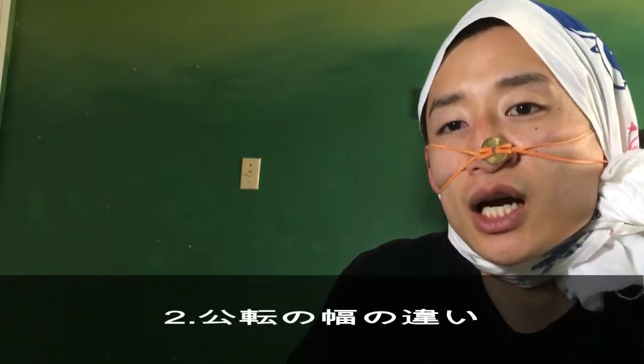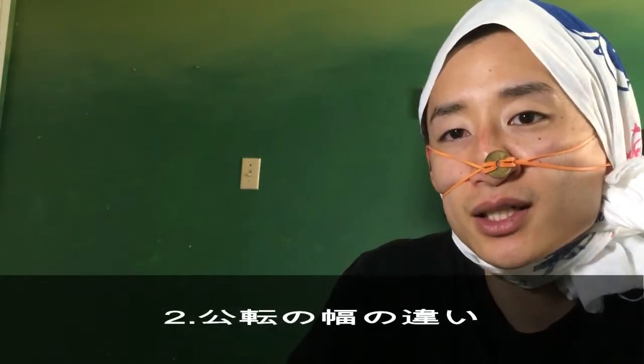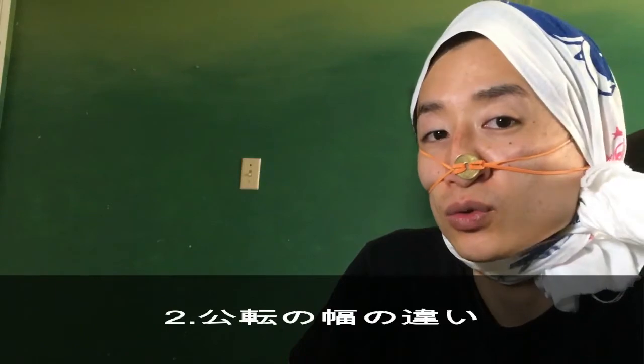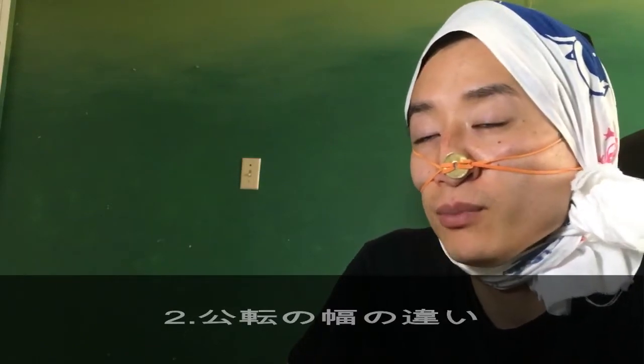なのでウィンドミルをまず早くしようと思ったら、できるだけ地面についている部分を小さくする、できるだけ小さくするというのが重要なポイントになってきます。2つ目は高点の幅が違います。1つ目のついている面積、ついている部分の大きさがかなり関わってくるんですけれども。